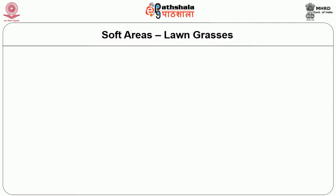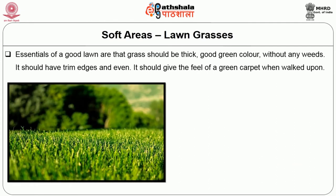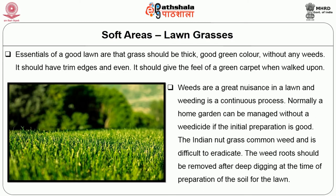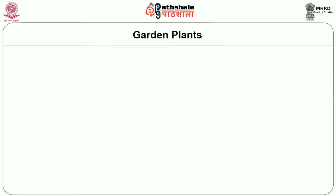Astro turfs cannot be damaged by pests and diseases. Essentials of a good lawn are that grasses should be thick, good green colour, without any weeds. It should have trim edges and be even, giving the feel of a green carpet when walked upon. Weeds are a great nuisance and weeding is a continuous process. The Indian nut grass is the most common weed and is difficult to eradicate; weed roots should be removed after deep digging during preparation of soil for the lawn.